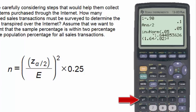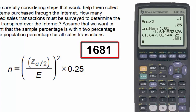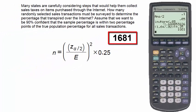Now the x squared key and then we can multiply this by 0.25, and we see when we hit the enter key that our number is 1,681. So the number of randomly selected sales transactions that must be surveyed to determine the true percentage that transpired over the internet and to get a 90 percent confidence interval estimate of that number, we would need to sample 1,681 such transactions.